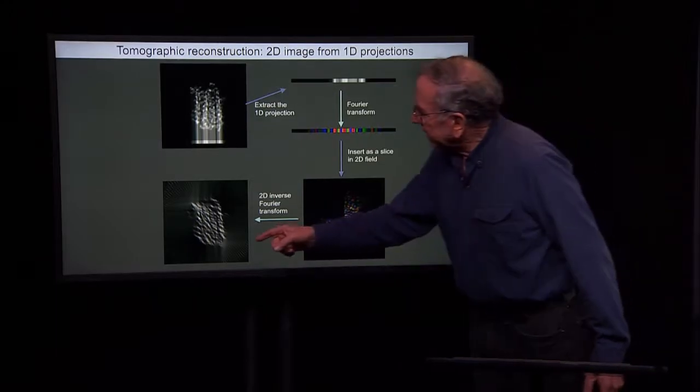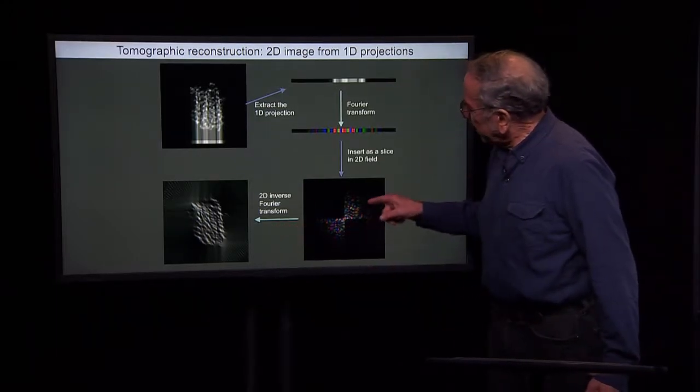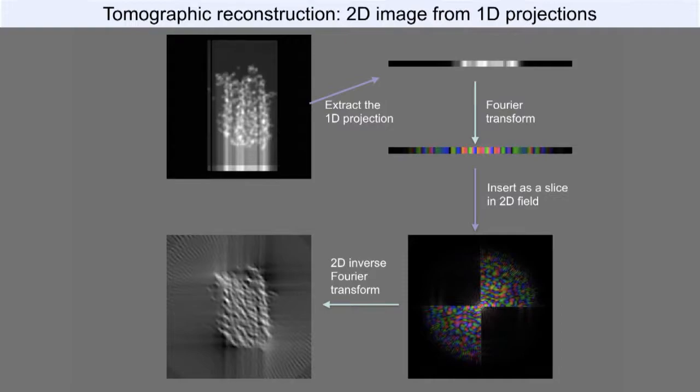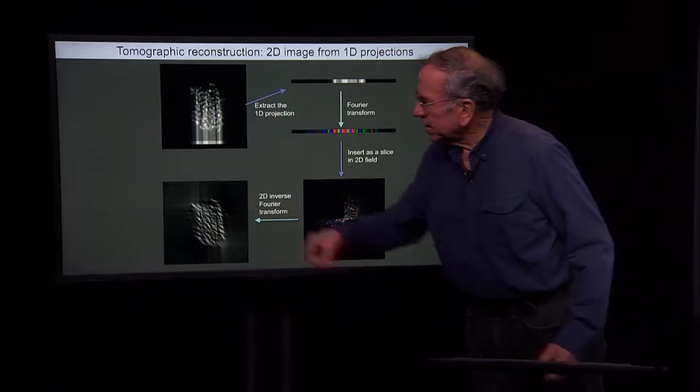The artifacts are such that if we look along a direction where we have information, like here we actually have pretty good high resolution information, but along this other direction where the missing wedge is present, things are smeared out.